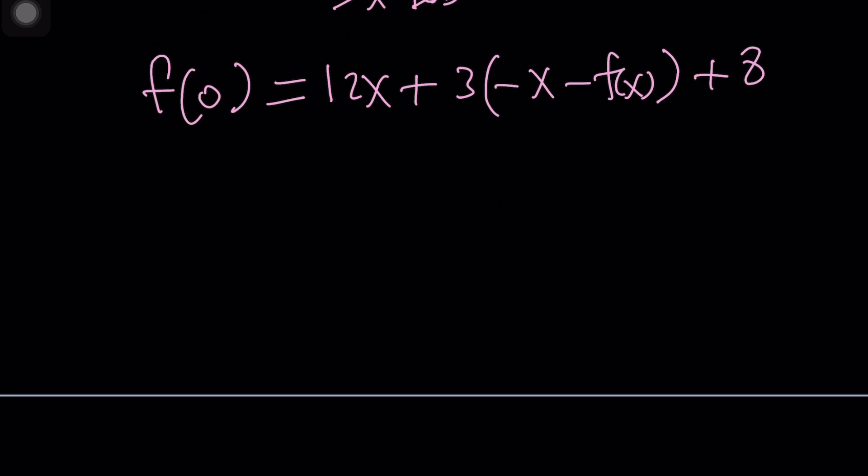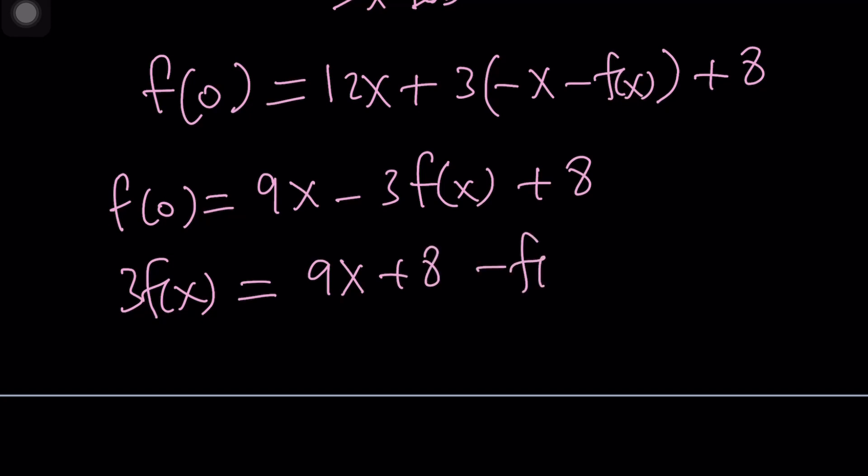Let's go ahead and simplify this as much as possible. This gives me f of 0 equals 12x minus 3x, which is 9x, minus 3 f of x plus 8. Maybe I can just put the 3 f of x on the left hand side because I'm trying to solve for f of x, so that kind of makes sense.